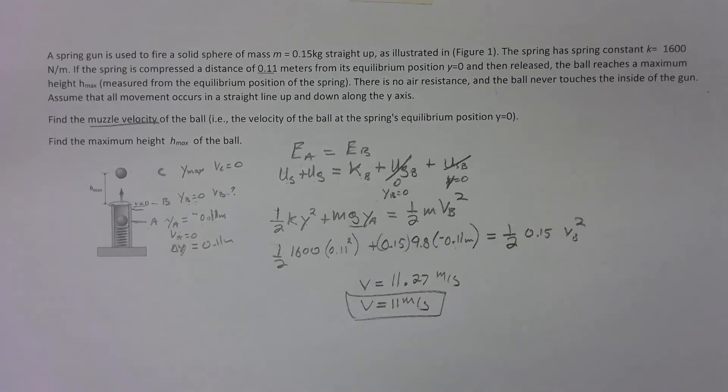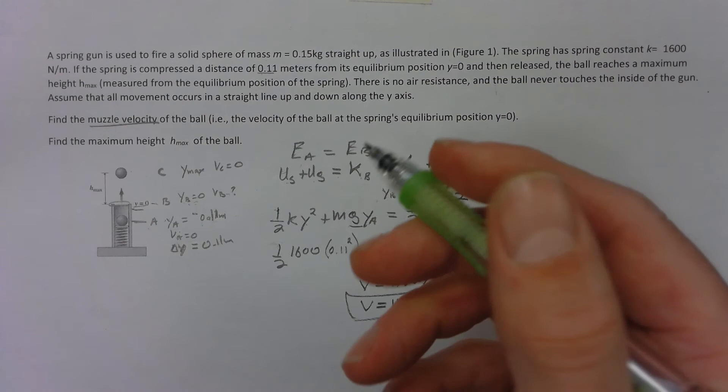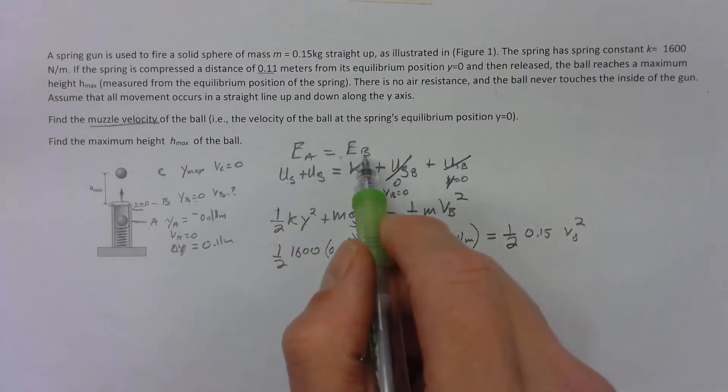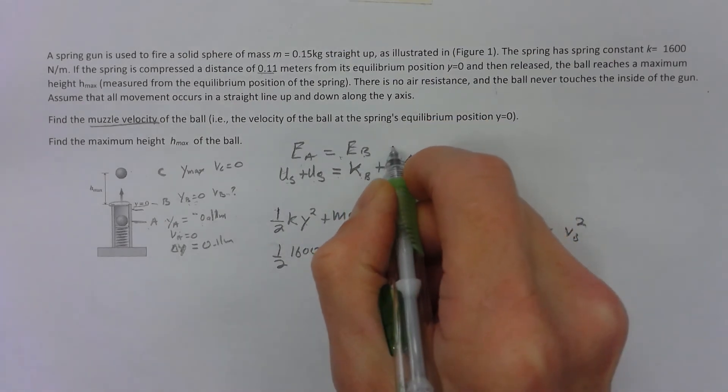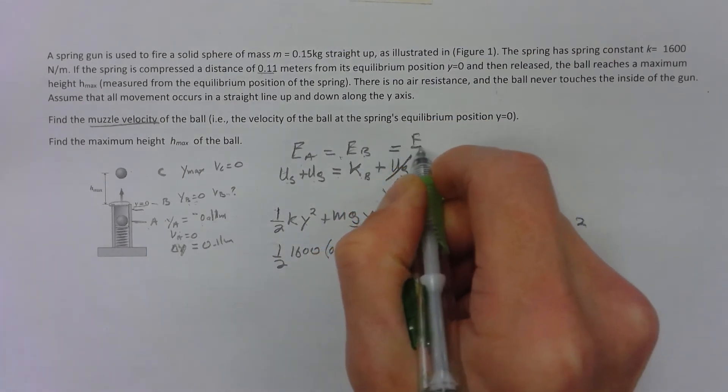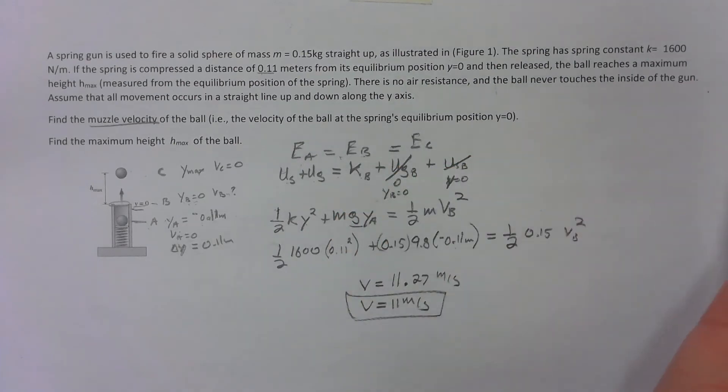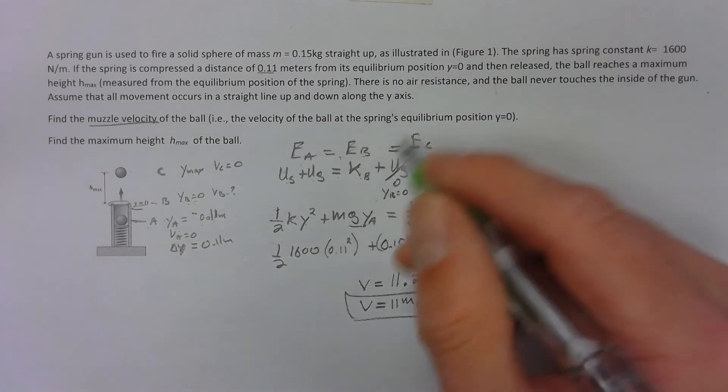Now what's the maximum height that ball reaches? Well, we can just go from anywhere, the energy is conserved all the way along. We had energy a equals energy b, that also equals energy c. We can go a to c or b to c, it doesn't matter, it's the same amount of energy.